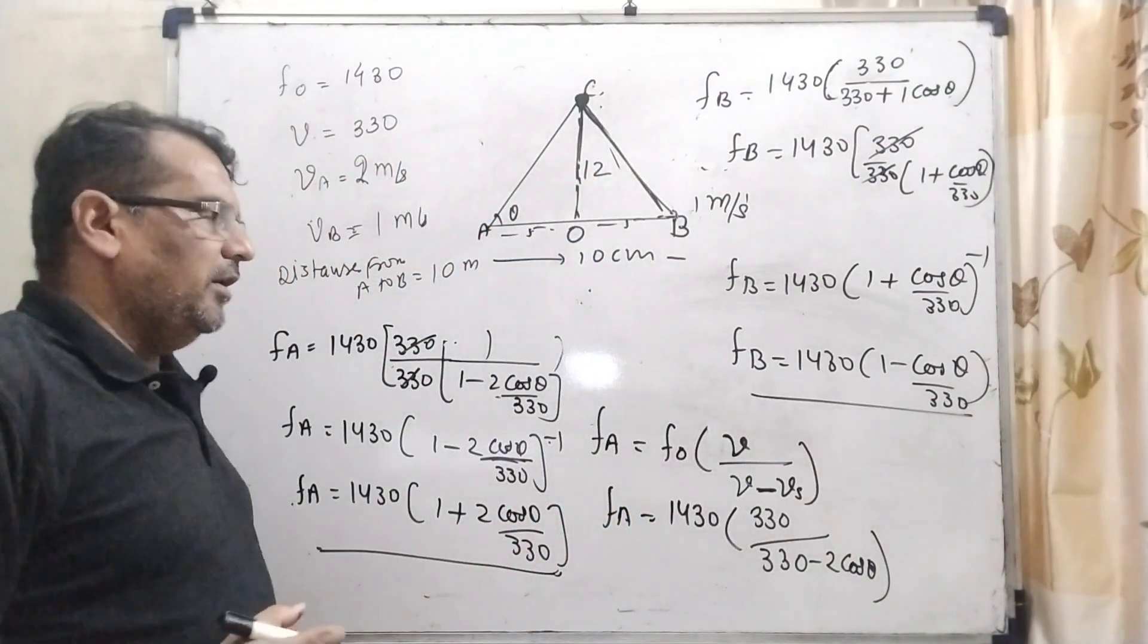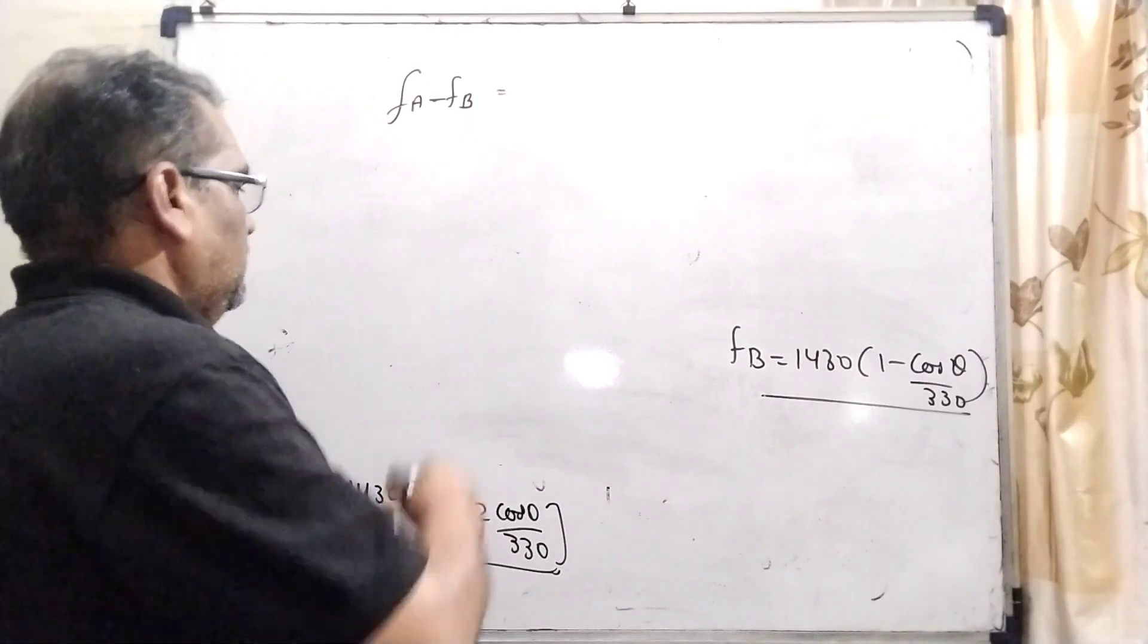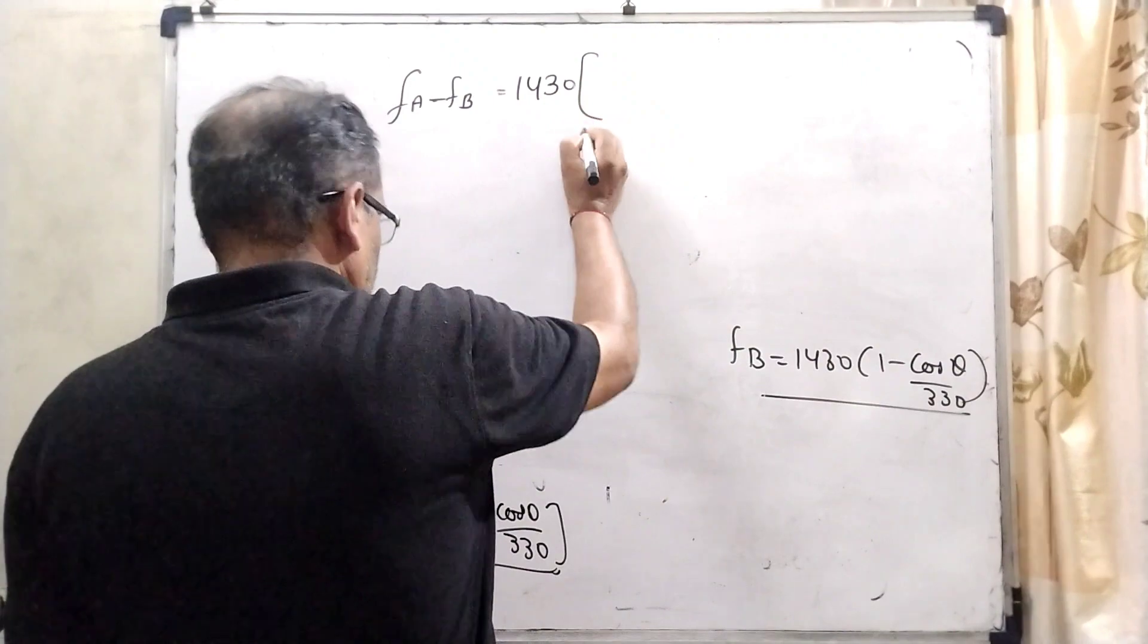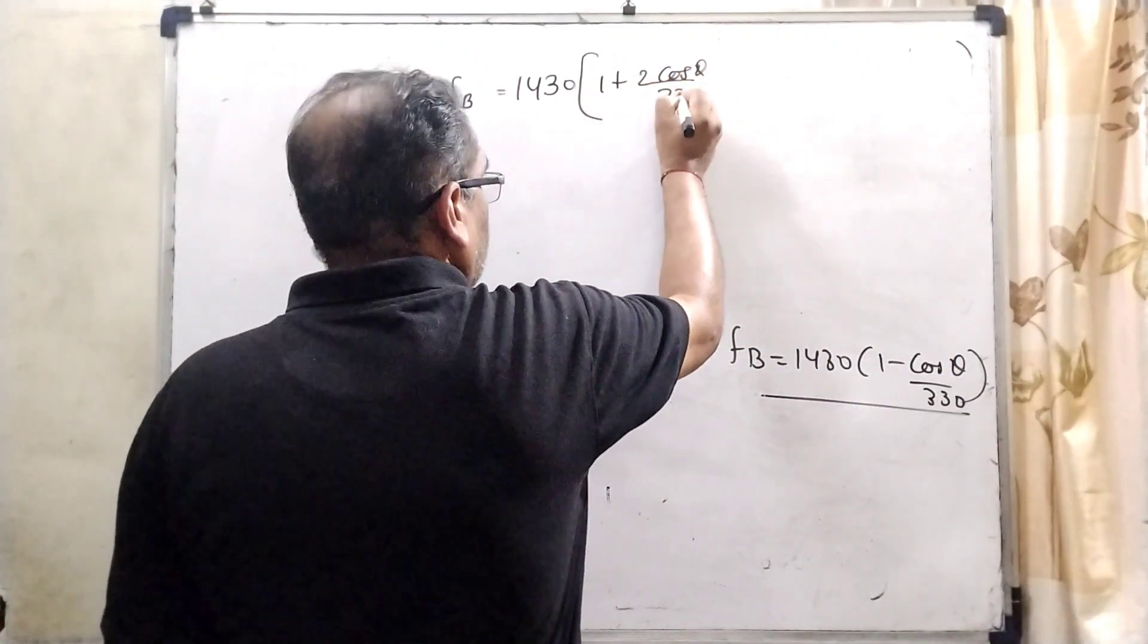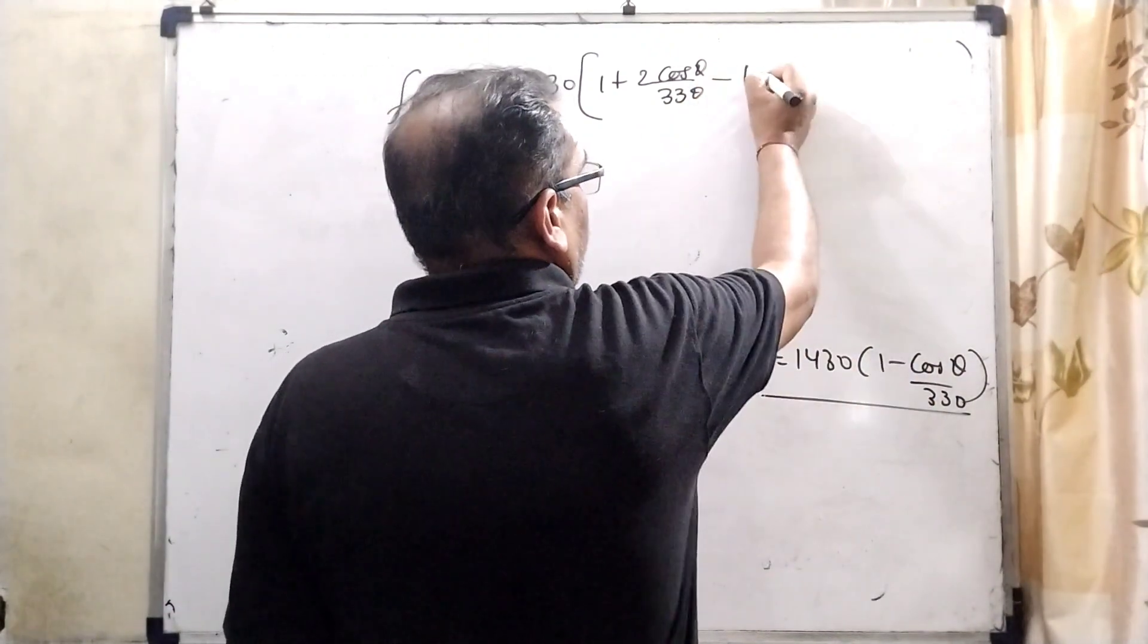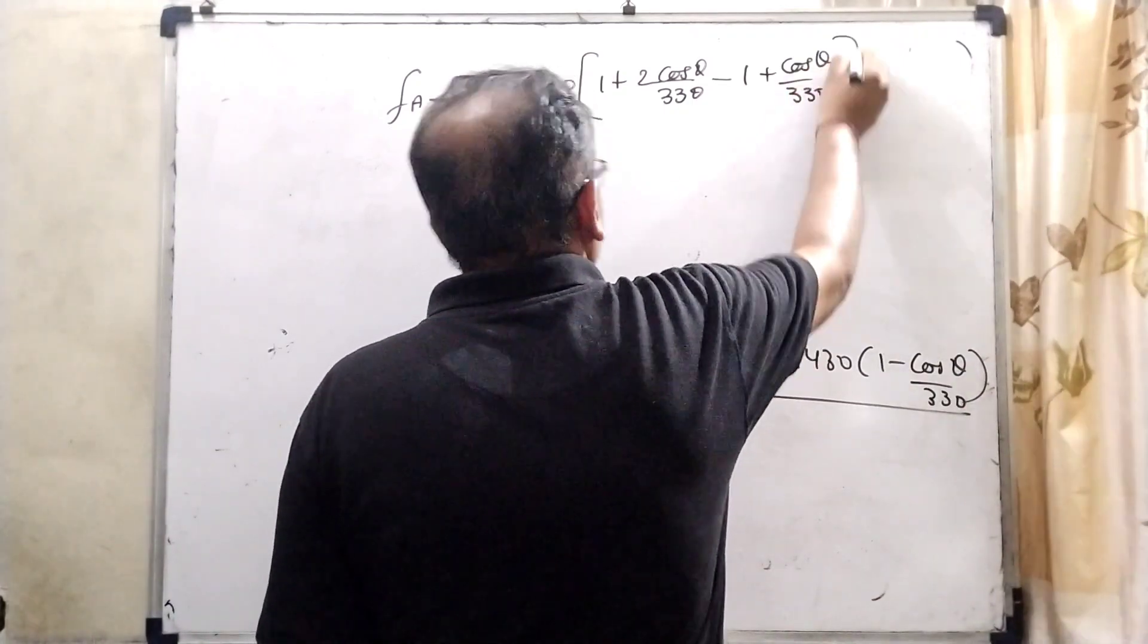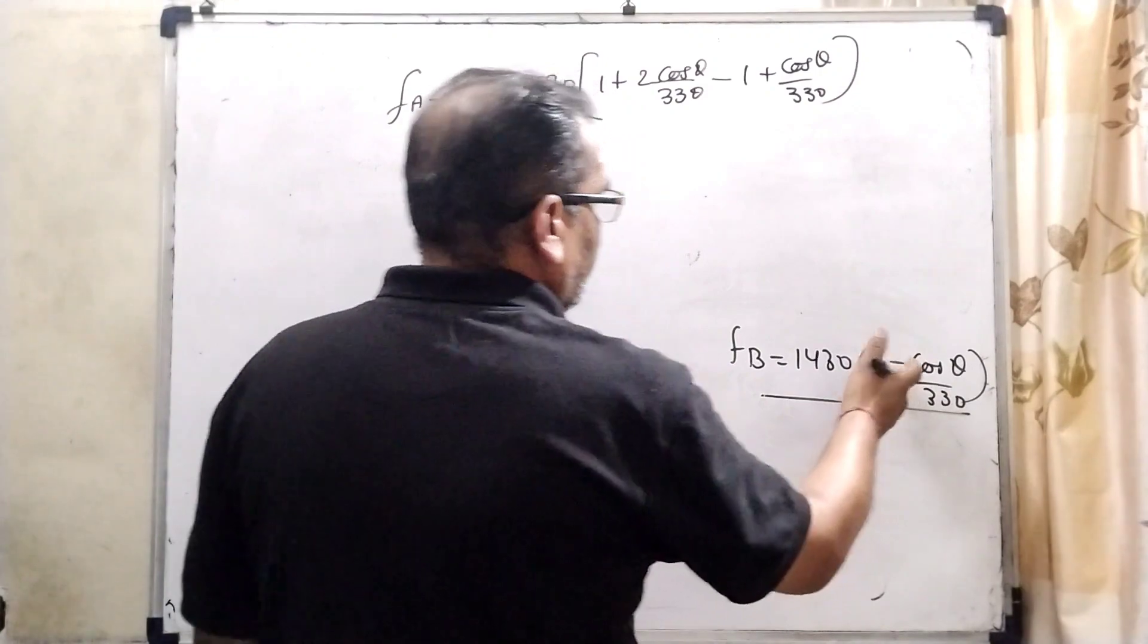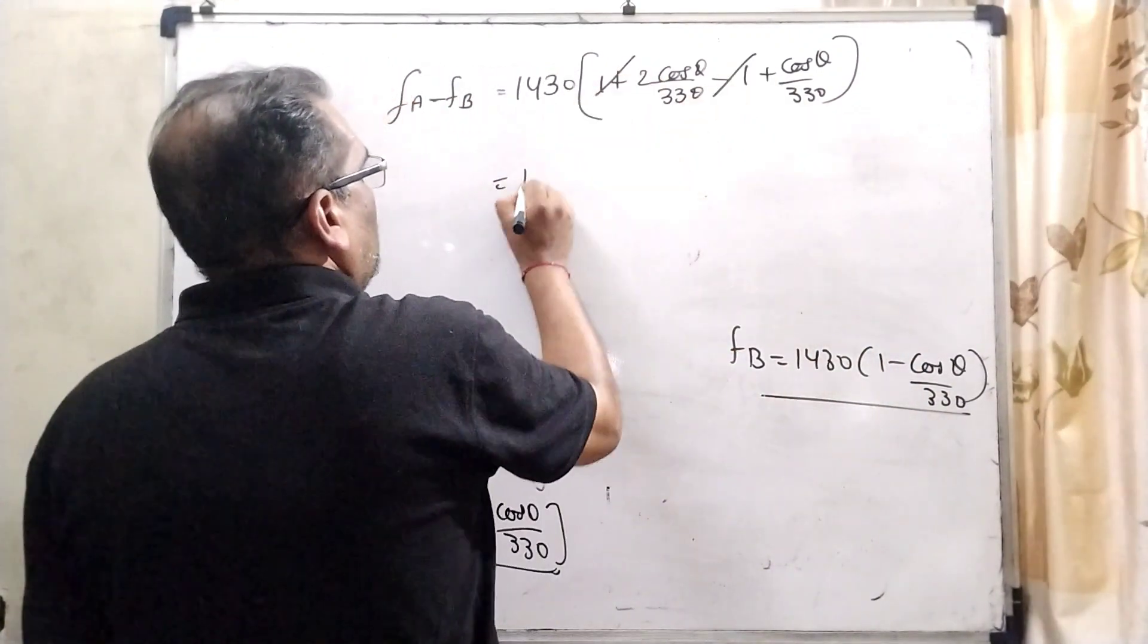Now, the difference between fₐ minus f_B is: 1430 × [1 + (2 cos θ / 330) - 1 - (cos θ / 330)]. Because it is fₐ minus f_B, multiply with minus, it becomes plus.